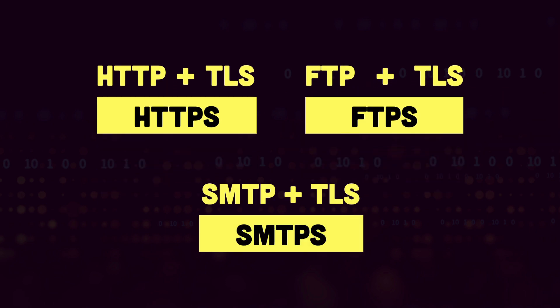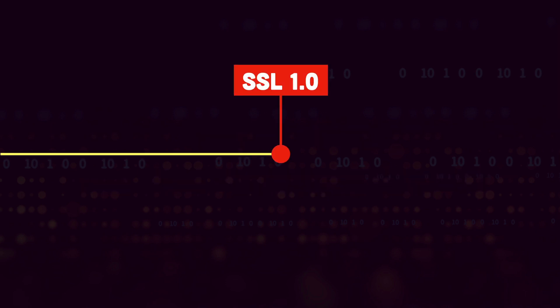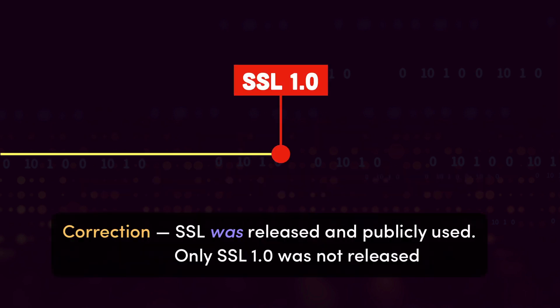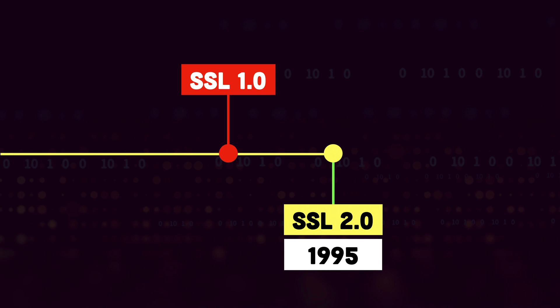You might be wondering why we have two different names for the same protocol. The names TLS and SSL are mostly used interchangeably, but SSL was the first version of the secure protocol that was never released, mainly because of security concerns. The first official release was SSL 2.0, which was made in 1995.